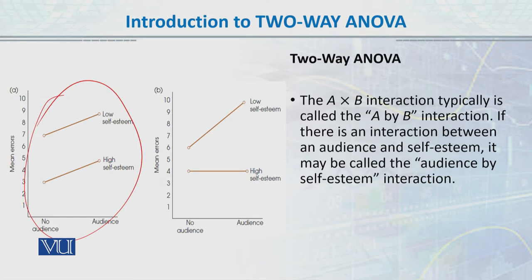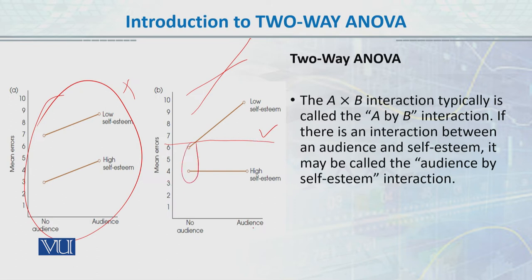Looking at the graphs: for one graph we do have an interaction effect, and for another graph we don't. When there is no audience, low and high self-esteem produce the same effect. But together — when audience and self-esteem interact — it gives us very interesting and unique results. Audience and self-esteem are both important, but they are more important in combination: when there is an audience present and the person has low self-esteem, they will be making more errors.